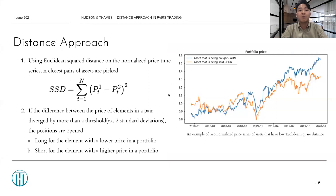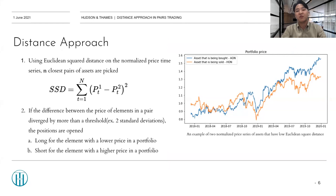So what is the basic concept of the distance approach? As the name implies, it uses distance between stocks. Using Euclidean square distance on the normalized price time series, the closest pairs are picked in the pair selection period. In other words, stocks which have similar movement during the formation period become pairs for trading. After we form the pairs, we generate trading signals and trade.